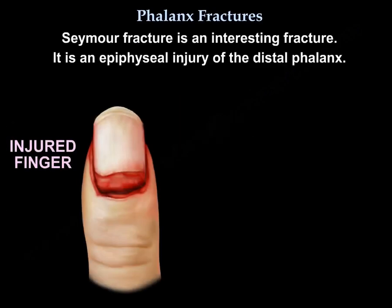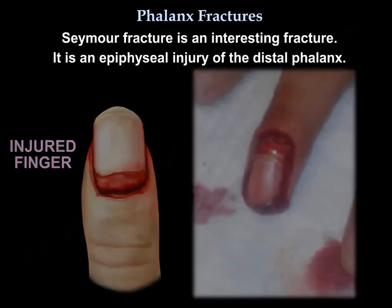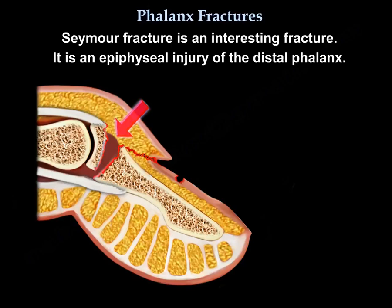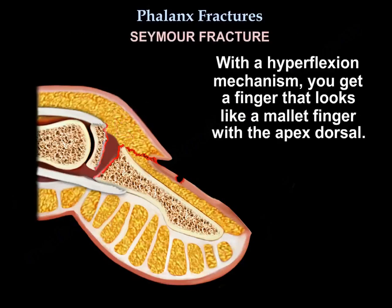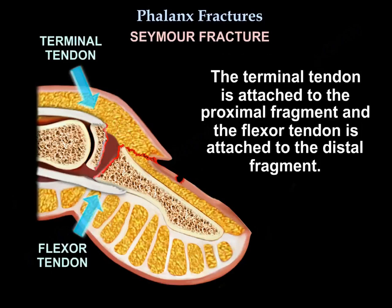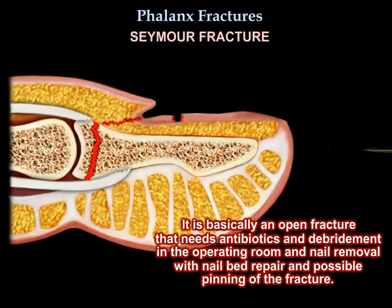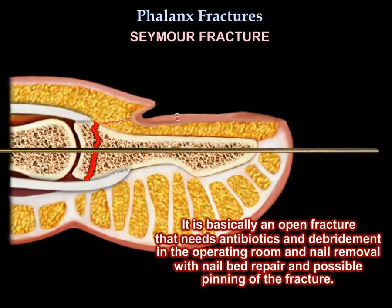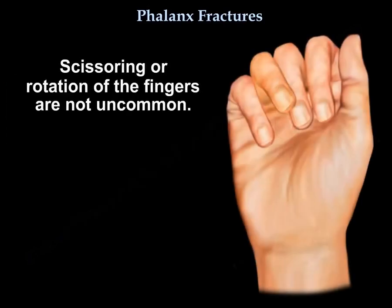The Seymour fracture is an interesting fracture — it is an epiphyseal injury of the distal phalanx. With a hyperflexion mechanism, the finger looks like a mallet finger with the apex dorsal. The terminal tendon is attached to the proximal fragment and the flexor tendon to the distal fragment. It is essentially an open fracture that needs antibiotics and debridement in the operating room, nail removal with nail bed repair, and possible pinning of the fracture. Scissoring or rotation of the fingers is not uncommon.